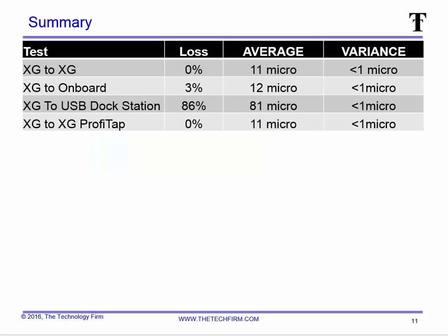Now the summary. XG to XG: no loss, 11 microsecond average, variance less than a microsecond. XG to my onboard Ethernet: 3% loss, 12 microsecond average latency, less than a microsecond variance. So if you just look at the packets you'd say the variance and average aren't bad — but I dropped 3% of them. XG to USB docking station: this didn't go well at all. And lastly, XG to XG through the ProfiTap: zero loss, 11 microseconds average, and 1 microsecond variance — pretty much transparent, if you want to look at it that way.